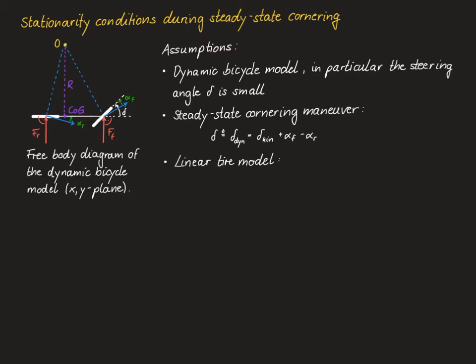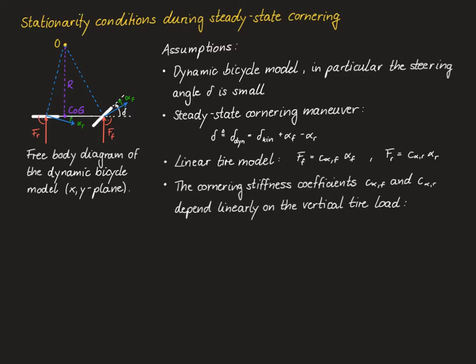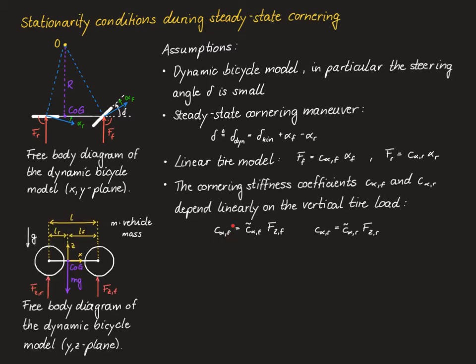The third main assumption is a linear tire model, making our dynamic bicycle model a linear bicycle model. The front tire force equals the cornering stiffness of the front tire times the front slip angle, and the rear tire force equals the cornering stiffness of the rear tire times the rear slip angle. The fourth assumption is that the cornering stiffness coefficients C_alpha_F and C_alpha_R depend linearly on the vertical tire load, given by proportional factors C_tilde_alpha_F and C_tilde_alpha_R for front and rear respectively.